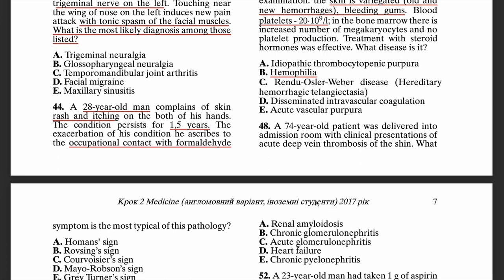The question at hand is: what symptom is most typical for this pathology? We have a 74-year-old patient delivered to the admissions room with clinical signs of acute deep vein thrombosis. The clinical feature most significant to this disorder is Homans' sign, which is basically a dorsiflexion sign — bending your foot towards your shin — and that is what usually produces the pain.